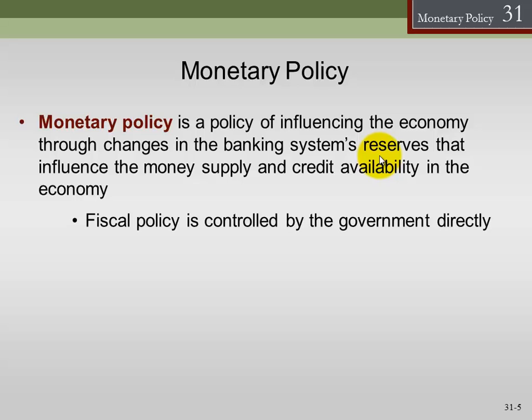Fiscal policy, on the other hand, is controlled by the federal government or state governments — that's the taxing, spending, and borrowing policies set by the government. In the U.S., federal fiscal policy goes through Congress and is signed into law by the President. Monetary policy, which refers to manipulation of the money supply, is done entirely by our central bank, the Federal Reserve System.